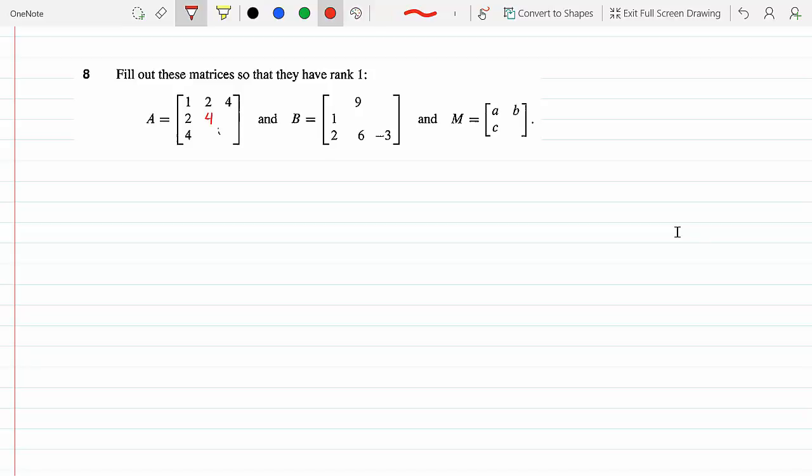So 1, 2, 4 - from this column to this column we just have to multiply by 2, so that makes it 4 and 8. And then the third column will be 4 times the first column: 4, 8, 16.